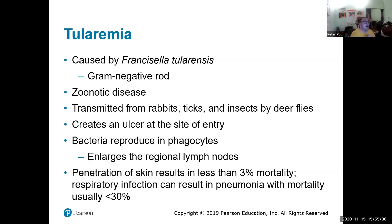Tularemia is spread by rabbits and other animals. It is a gram-negative rod and is a sporadic disease. It creates an ulcer at the site of entry. The bacteria can actually get into phagocytes and reproduce inside them. Penetration of the skin results in about 3% mortality, but if you inhale it, the mortality is greater than 30%.